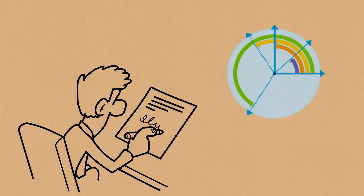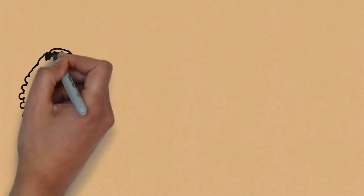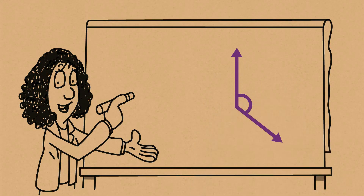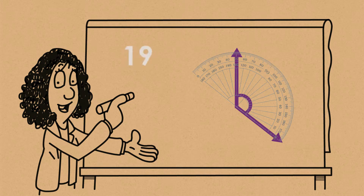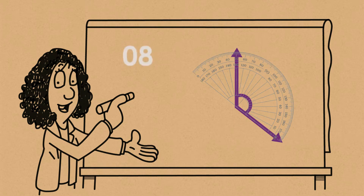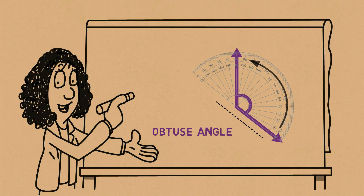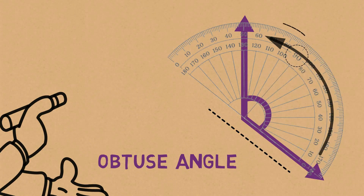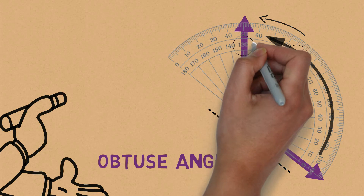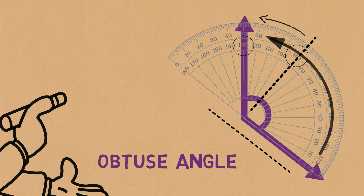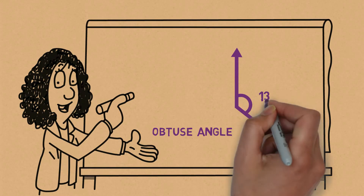Let's go ahead and identify these types of angles. So the first angle I'm going to draw is this one. Can you try identifying what this angle is? This is an obtuse angle, because we can see it's generally more than 90 degrees. If it were 90 degrees, it would have to go straight over here. Since it's more than 90 degrees, it's an obtuse angle.